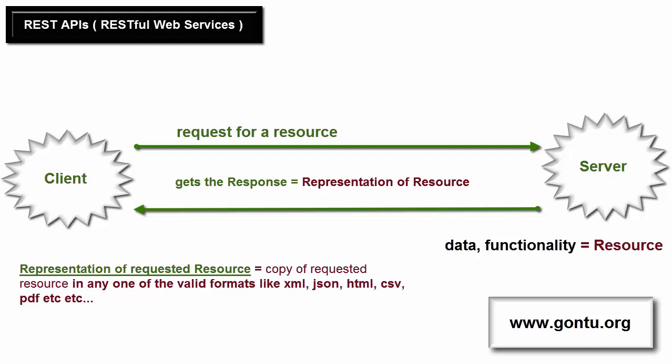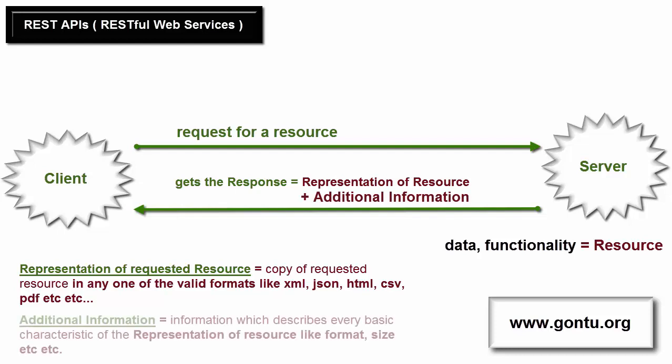In addition to the representation of the requested resource, the response also contains some additional information which describes every basic characteristic of this representation, like its format, its size, or any other similar information. So upon receiving the response, just by analyzing this additional information, the client will come to know about all basic details it may require while processing the representation. According to REST guidelines, once a client receives the response — the representation of the requested resource as well as the additional information describing it — the client should be able to modify or even delete the corresponding resource present at the server if it wants to.